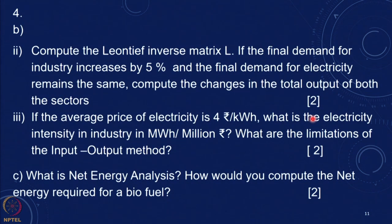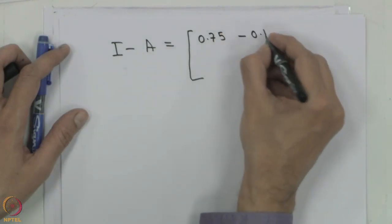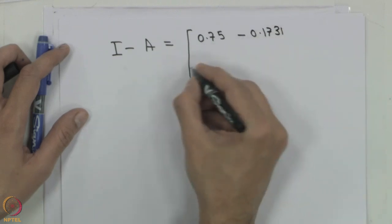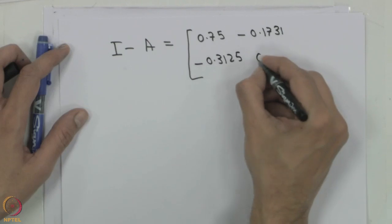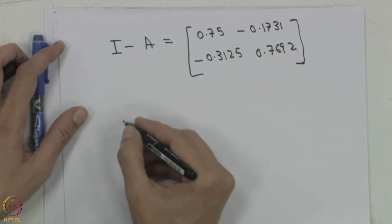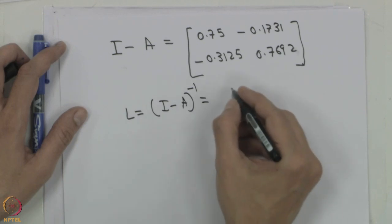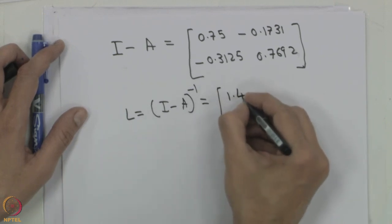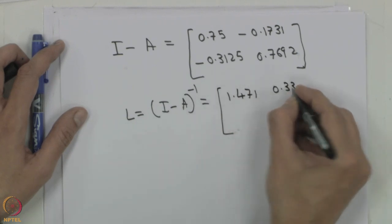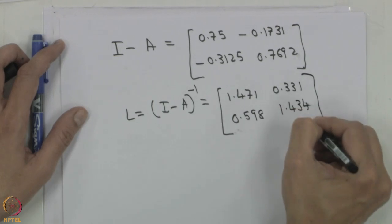Let us compute the Leontief inverse matrix L. We calculate I minus A, which gives 0.75, minus 0.1731, minus 0.3125, and 0.7692. The Leontief inverse L equals (I minus A) inverse. Using the inverse formula, we get approximately 1.471, 0.331, 0.598, and 1.434. Note that the diagonal elements are greater than 1, as expected.